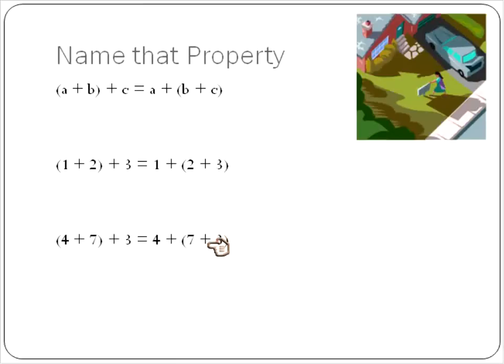Like 7 and 3 is 10. 10 and 4 is 14. It might be easier than saying 4 plus 7 is 11. 11 plus 3 is 14. It might be easier to put these ones together first. This would be a practical use of the property, and it is the associative property of addition.